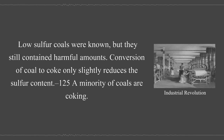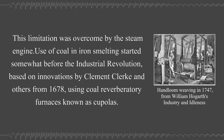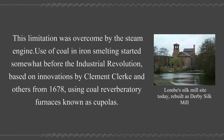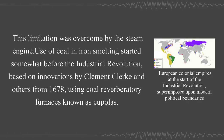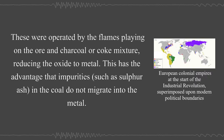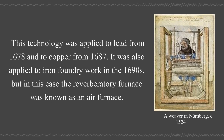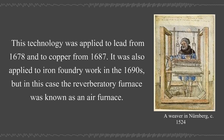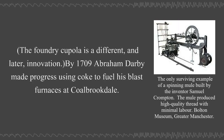Another factor limiting the iron industry before the Industrial Revolution was the scarcity of water power to power blast bellows, a limitation overcome by the steam engine. Use of coal in iron smelting started somewhat before the Industrial Revolution, based on innovations by Clement Clerk and others from 1678, using coal reverberatory furnaces known as cupolas. These were operated by the flames playing on the ore and charcoal or coke mixture, reducing the oxide to metal—this had the advantage that impurities such as sulfur ash in the coal do not migrate into the metal. This technology was applied to lead from 1678 and to copper from 1687, and also to iron foundry work in the 1690s, where the reverberatory furnace was known as an air furnace.